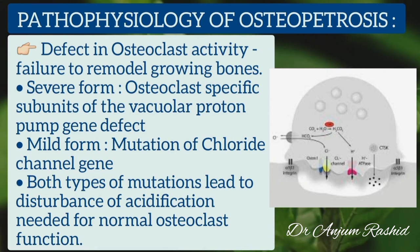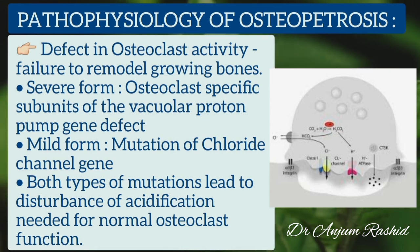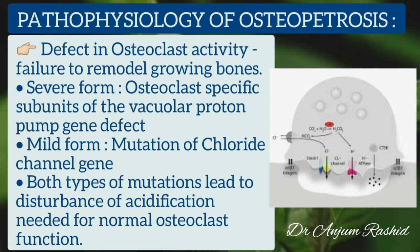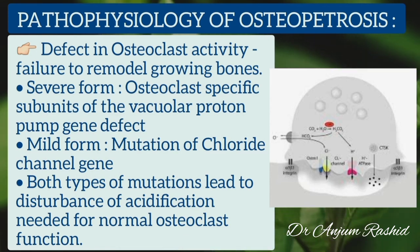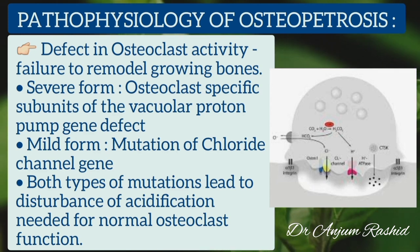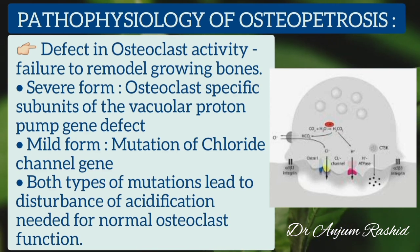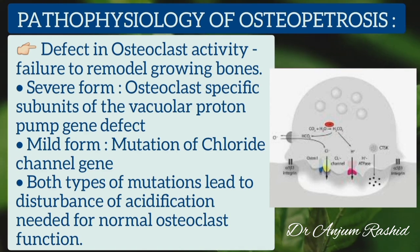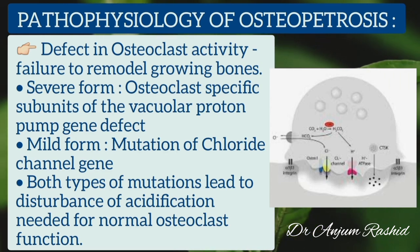The pathophysiology of osteopetrosis is due to a defect in osteoclast activity, leading to failure to remodel growing bones. In the severe form, a defect in the osteoclast-specific subunit of the vacuolar proton pump gene is present, while in the mild form there is a mutation of the chloride channel gene. Both mutations lead to disturbance of acidification, which is needed for normal osteoclast function.